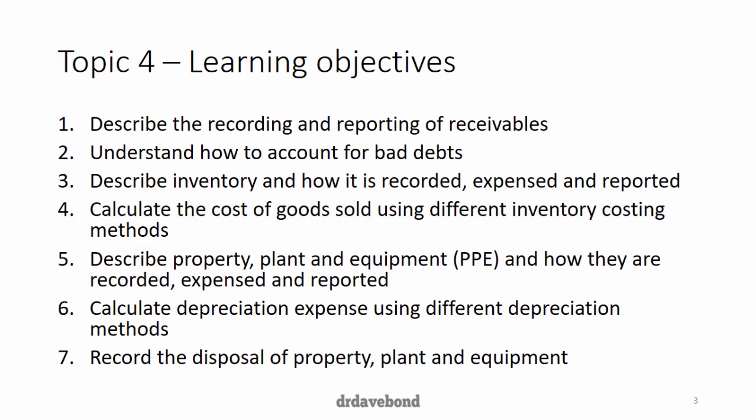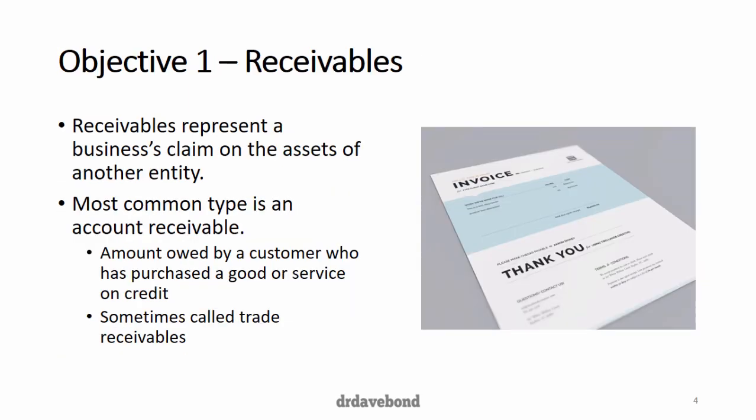Turning first to receivables. Receivables represent a business's claim on the assets of another entity. Most commonly we see them as accounts receivable — when an amount is owed by a customer who has purchased a good or service on credit. Sometimes they're called trade receivables, and we saw that in Woolworths' financial statements where they had trade and other receivables listed.